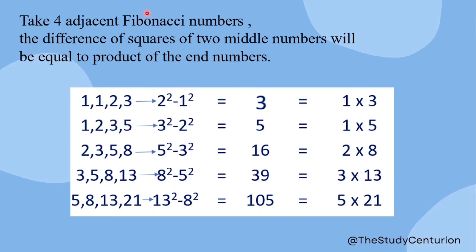For the next 4 Fibonacci numbers: 1, 2, 3, 5. The middle numbers are 3 and 2. Squares in the difference: 3 squared minus 2 squared equals 9 minus 4, which is 5. The end numbers are 1 and 5, so 1 times 5 equals 5. For 3, 5, 8, 13: the middle numbers are 8 and 5, so 64 minus 25 equals 39. The end numbers are 3 and 13, so 3 times 13 also equals 39.